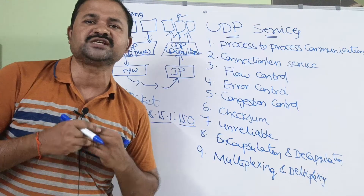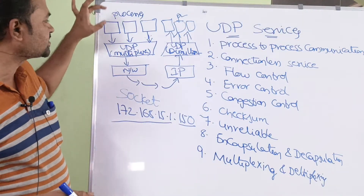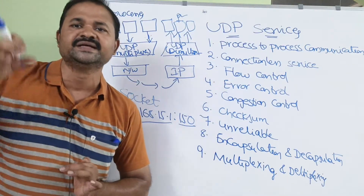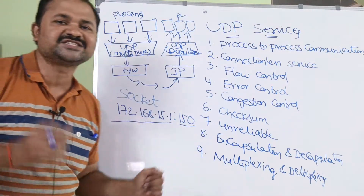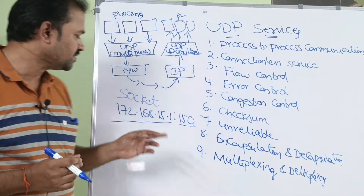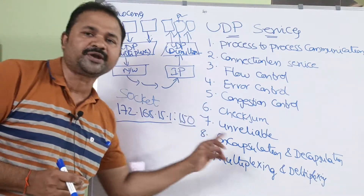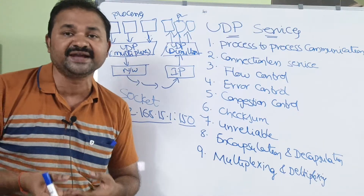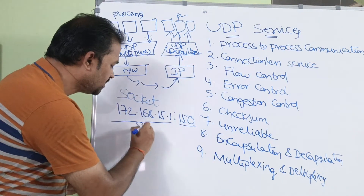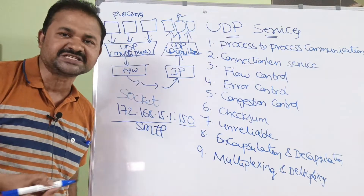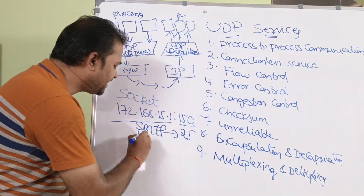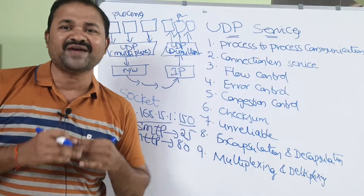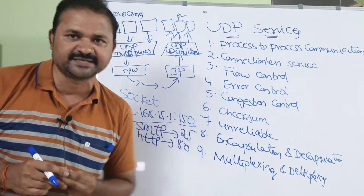The first one is process-to-process communication. A process on a source host can communicate with a process on a destination host with the help of a socket. A socket means a combination of IP address and port number. We have 1024 well-defined, pre-defined port numbers. For example, for SMTP — simple mail transfer protocol — the port number is 25. For HTTP, the port number is 80. Likewise, we have 1024 well-defined or pre-defined port numbers.